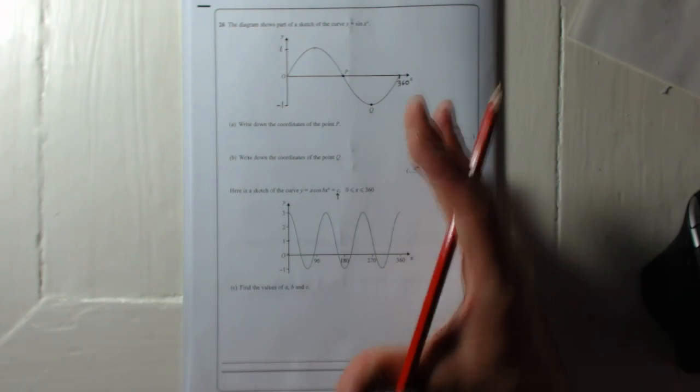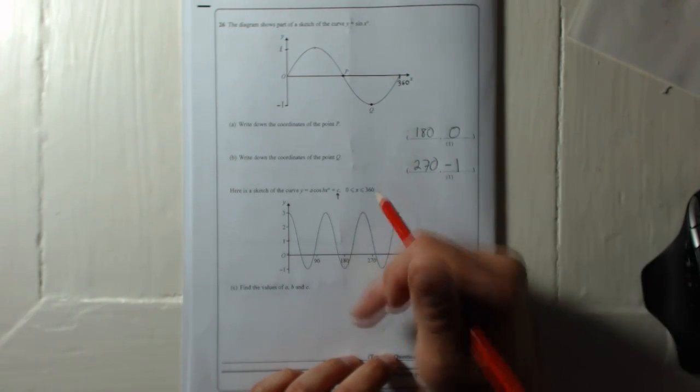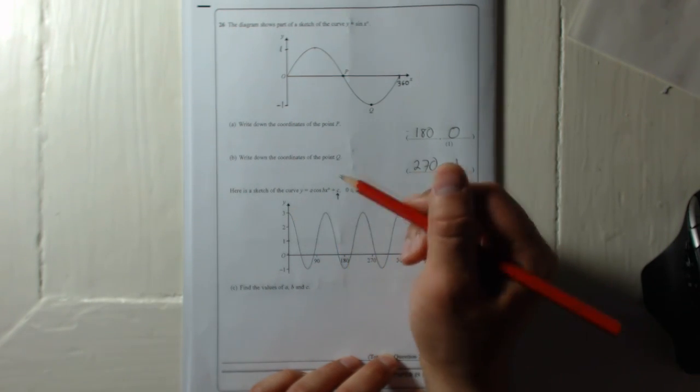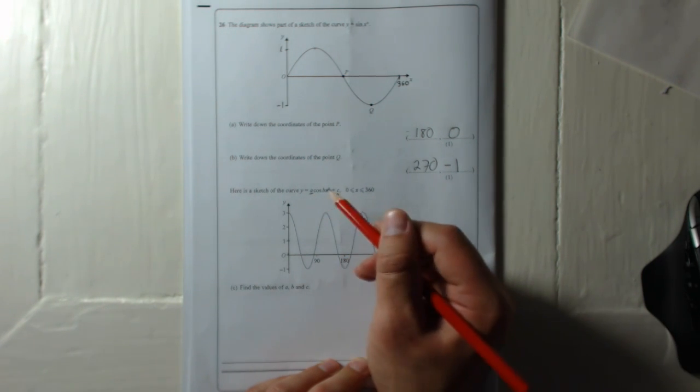Now this graph goes from minus 1 all the way up to 3, so it's actually been doubled in size in the y direction. So it's gone taller—taller both ways.